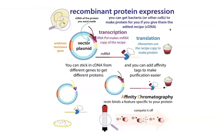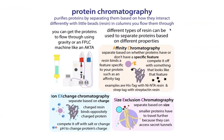In summary: we can get cells to make a protein using recombinant expression techniques, break those cells open, and use protein chromatography — running a mixture through columns with resin beads — to separate and isolate our protein of interest. Then scientists can use structural biology techniques to look at the structure, and biochemical assays to study the functions of the purified proteins.